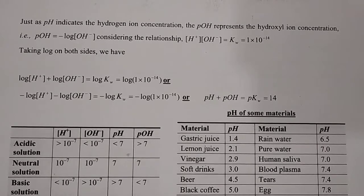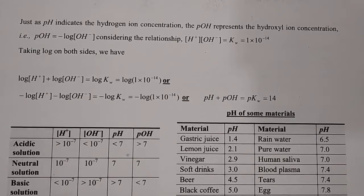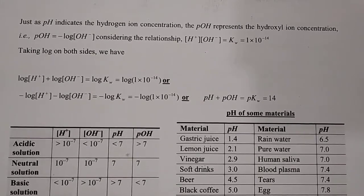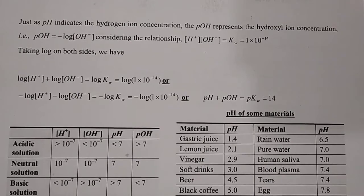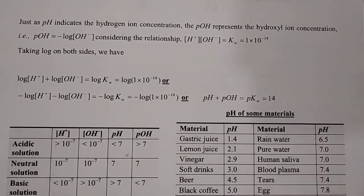Just as pH indicates the hydrogen ion concentration, pOH represents the hydroxyl ion concentration. pOH = −log[OH−]. Considering the relationship H+ + OH− = Kw — the ionic product of water discussed in a previous session — Kw = [H+][OH−] = 1×10⁻¹⁴. On the basis of this ionic product of water, the pH scale is identified as 0 to 14.